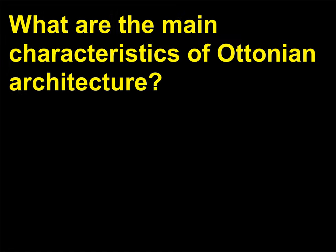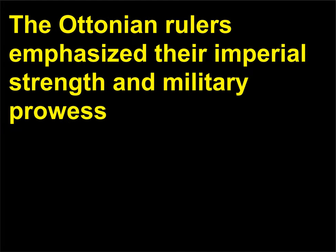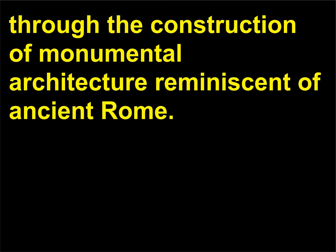What are the main characteristics of Ottonian architecture? The Ottonian rulers emphasized their imperial strength and military prowess through the construction of monumental architecture reminiscent of ancient Rome.